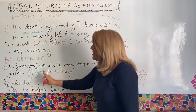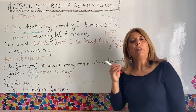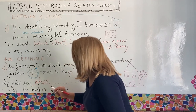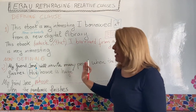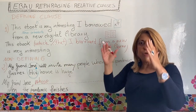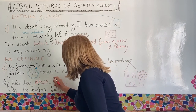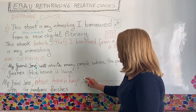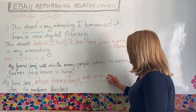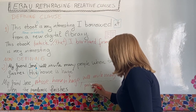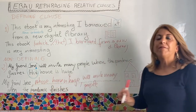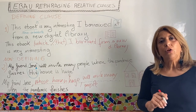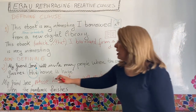We are talking about my friend's house. Seeing the possessive 'his', we think of a relative pronoun that indicates possession — that's 'whose'. Since we are talking about my friend Jose, the possession clause goes right after him. We say: 'My friend Jose, whose house is huge, will invite many people when the pandemic finishes.' Since it is non-defining, the pronoun cannot be omitted and the clause goes between commas, giving additional information about the antecedent — our friend Jose.